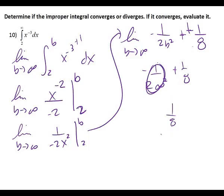Does it converge or diverge? Converges. Converge. So converge means it goes to a number. Converges if it goes to a number. If it goes to infinity, it diverges.